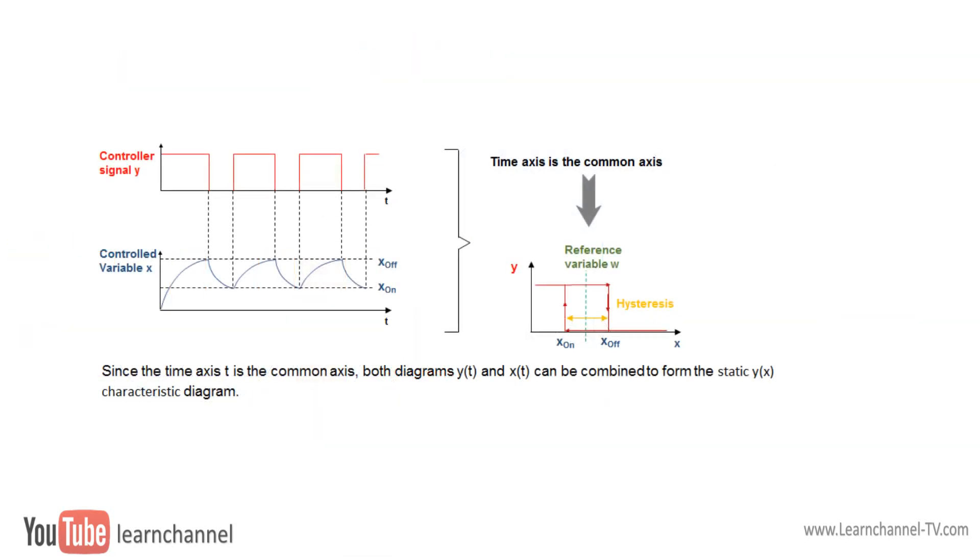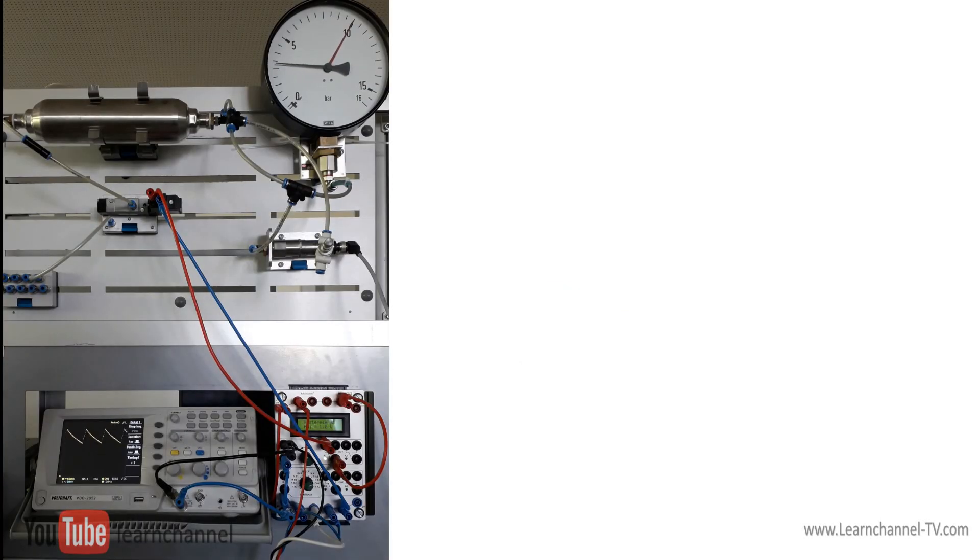If you want to know how the two-point controller got its symbol, then have a look at the static characteristics curve. It is a combination of two curves, the controller signal and the actual valve curve recorded over time.